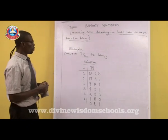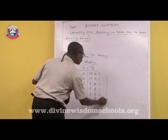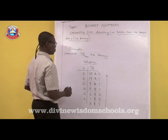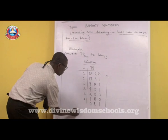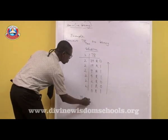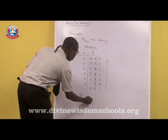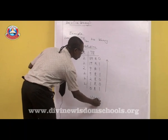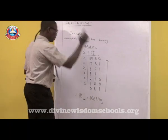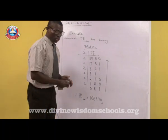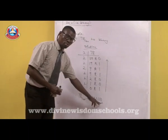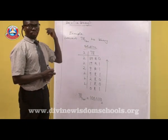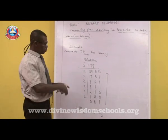After doing this, you will read your values upward — starting from the last remainder down to the top. That is to say, 78 in base 10 is equivalent to 1001110 in base 2. You discover here that none of the digits is equal to 2 or greater than 2. So this is how you convert from base 10 to binary.